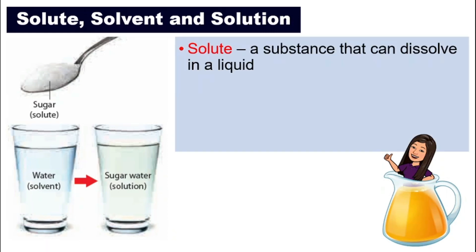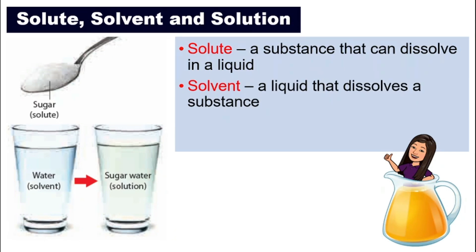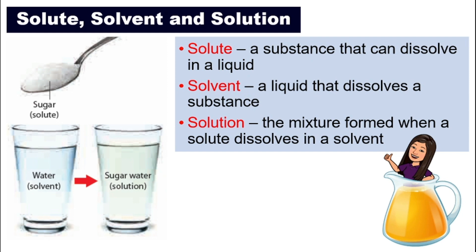Solute is a substance that can dissolve in a liquid, and normally we use a small amount of solute. So in this example, the solute will be the sugar. The solvent is the liquid that we use to dissolve the solute. So in this example, the solvent is water. And solution is the mixture or the result of dissolving solute in solvent. So in this example, the solution will be sugar water.